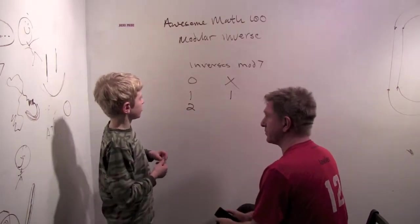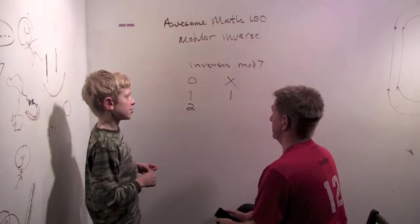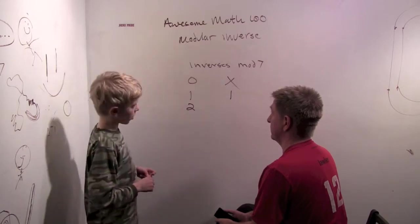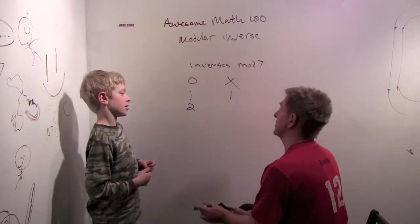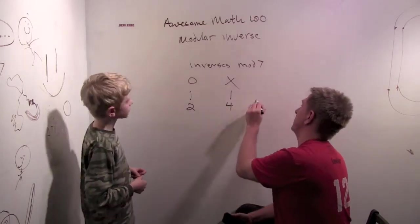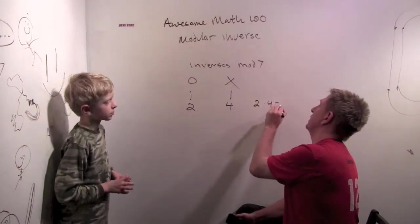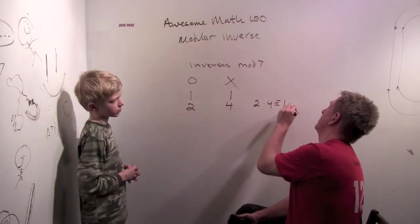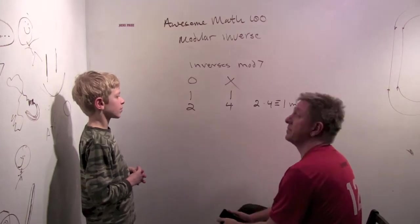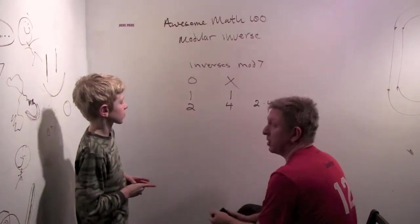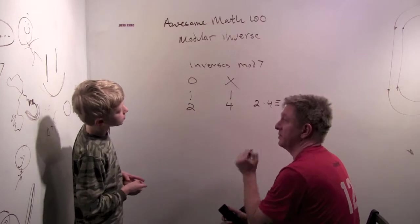Two. Well, two times four is eight, and that's one mod seven. So that's interesting. Two times four is congruent to one mod seven. So two and four are multiplicative inverses mod seven.